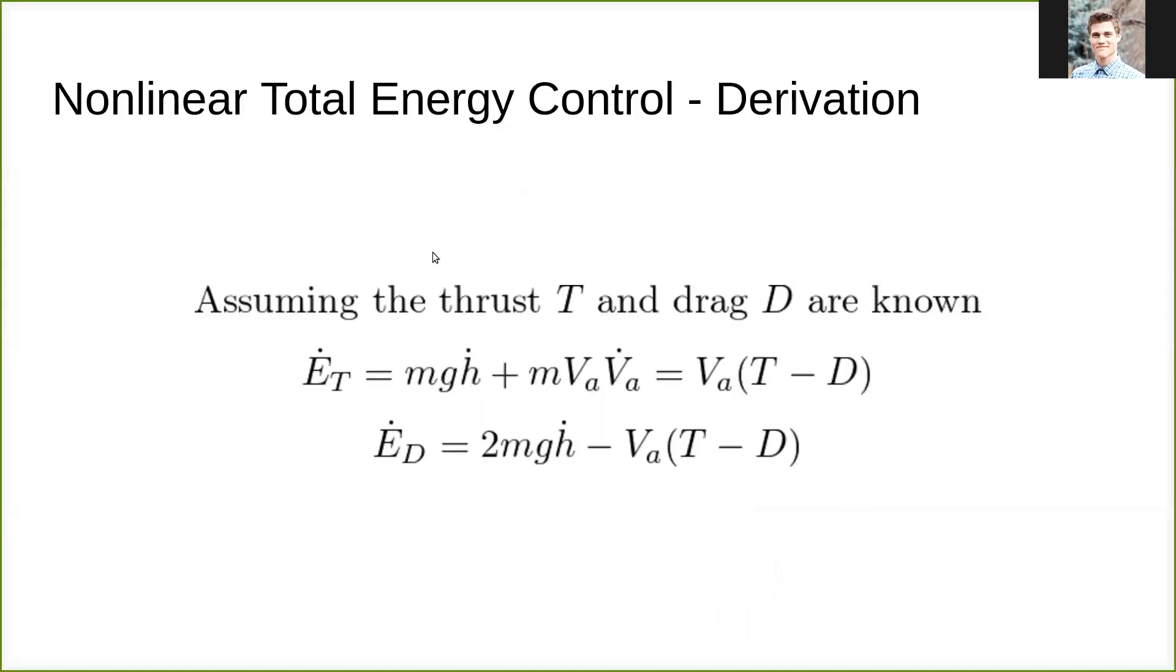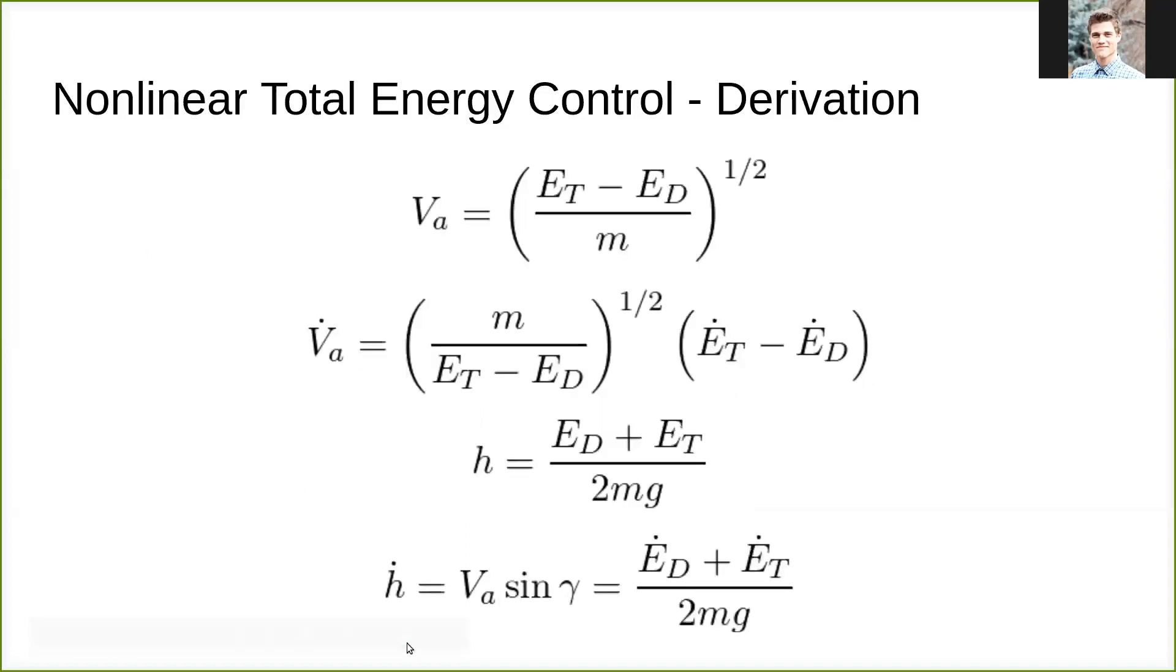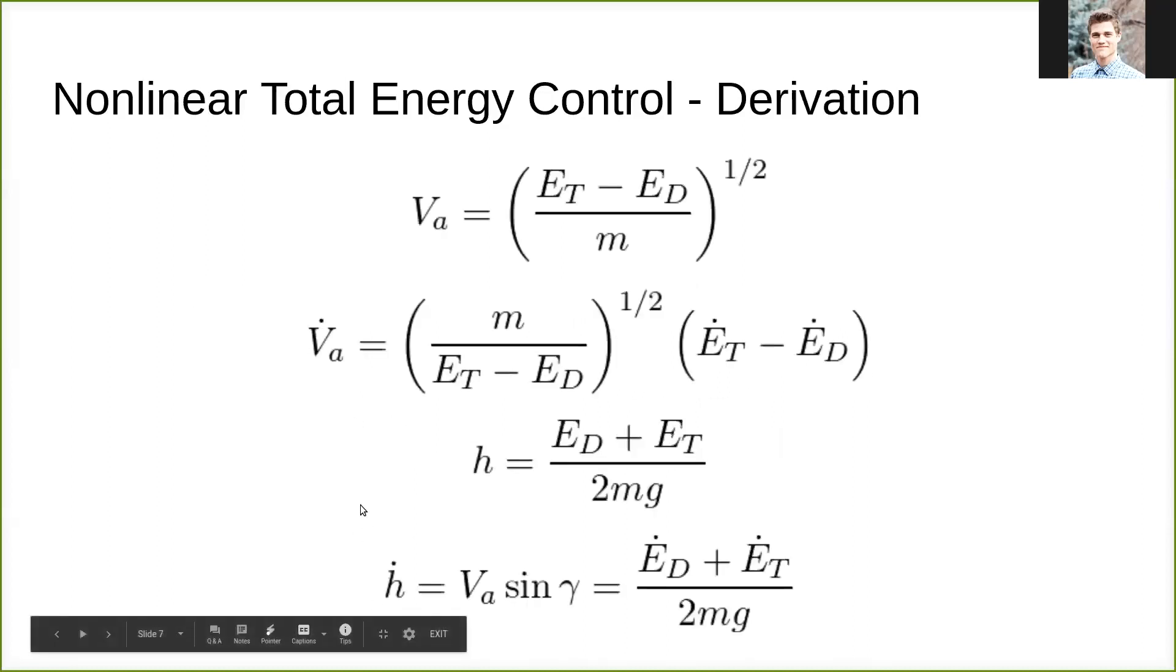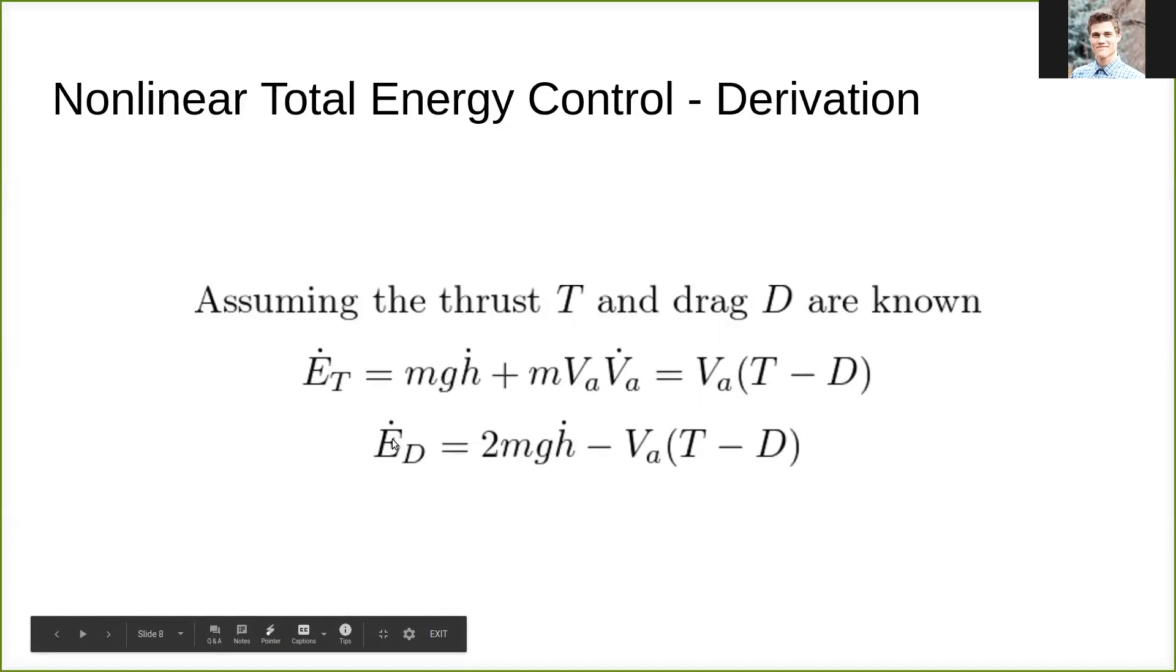Now, we first assume that we know what thrust and drag are for this case in the nonlinear total energy control. And we're able to then say, based off of our definitions of E_T dot, that this is simply the velocity multiplied by mass times acceleration in all of our axes to get our thrust minus drag, which is our non-conserved force in the system. And then using this H dot definition, we can solve for E_D dot in terms of E_T dot. And we can use that term to come to this conclusion right here.